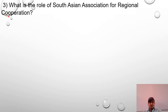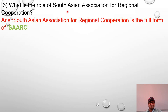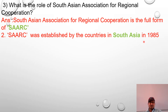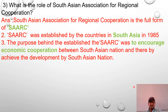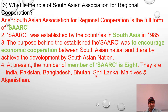Next question: What is the role of the South Asian Association for Regional Cooperation? Its short form is SAARC. The full form is South Asian Association for Regional Cooperation. SAARC was established in 1985 by the countries of South Asia. The purpose behind establishing SAARC was to encourage economic cooperation between South Asian nations and thereby achieve development. At present, SAARC has 8 members: India, Pakistan, Bangladesh, Bhutan, Sri Lanka, Maldives, Nepal, and Afghanistan.